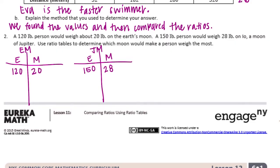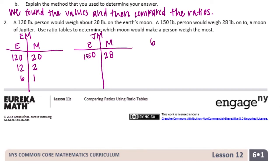For Earth's moon: 120 to 20 pounds. I can divide both by 10 to get 12 and 2, then divide both by 2 to get 6 to 1. So there's a 6 to 1 ratio. I want to find the weight for a 150-pound person — 6 times 25 is 150, so I multiply by 25. Someone who's 150 pounds would weigh 25 pounds on Earth's moon.